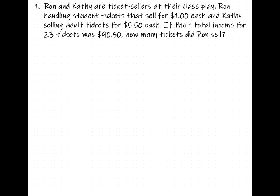Let's look at this problem: Ron and Kathy are ticket sellers at their class play. Ron is handling student tickets that sell for one dollar each; Kathy is selling adult tickets for $5.50 each. If their total income for 23 tickets was $90.50, how many tickets did Ron sell?